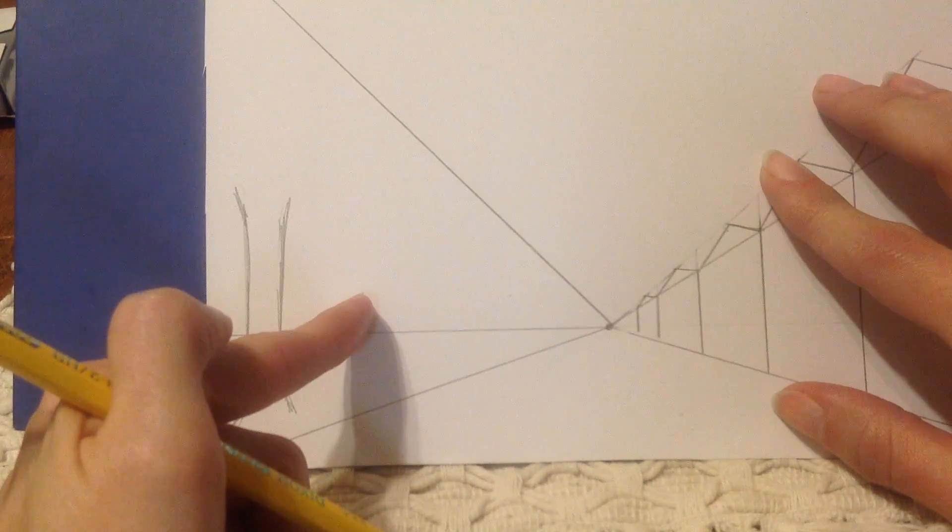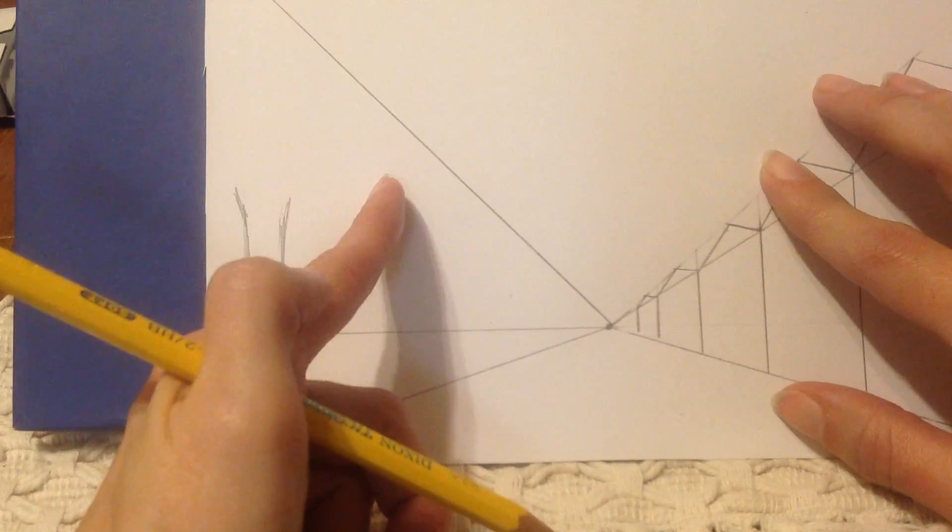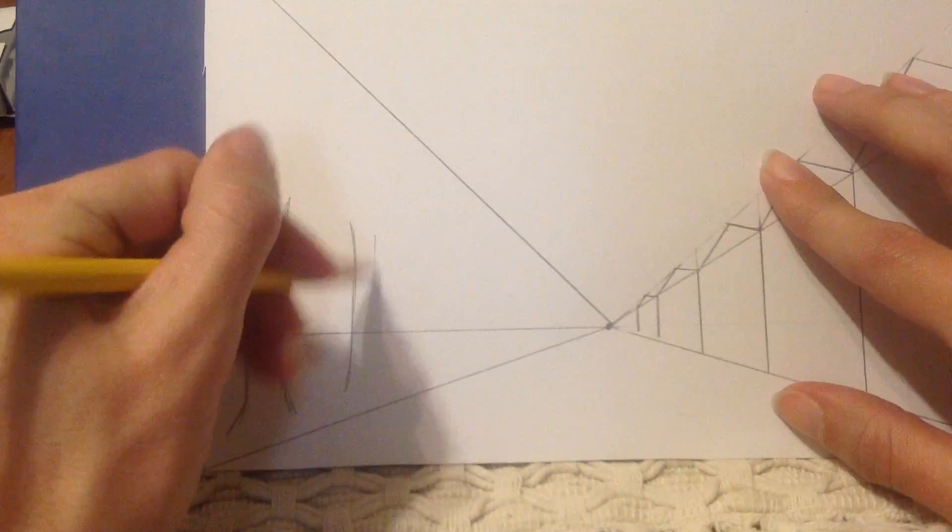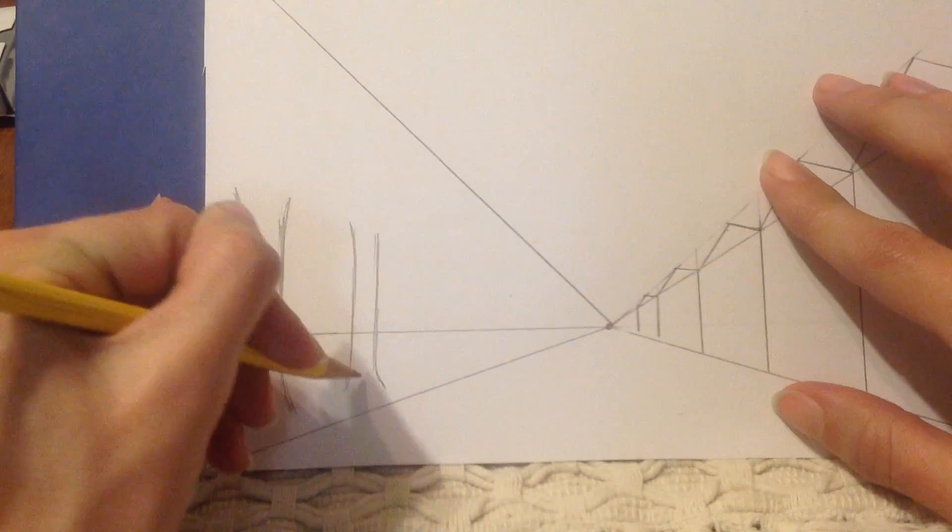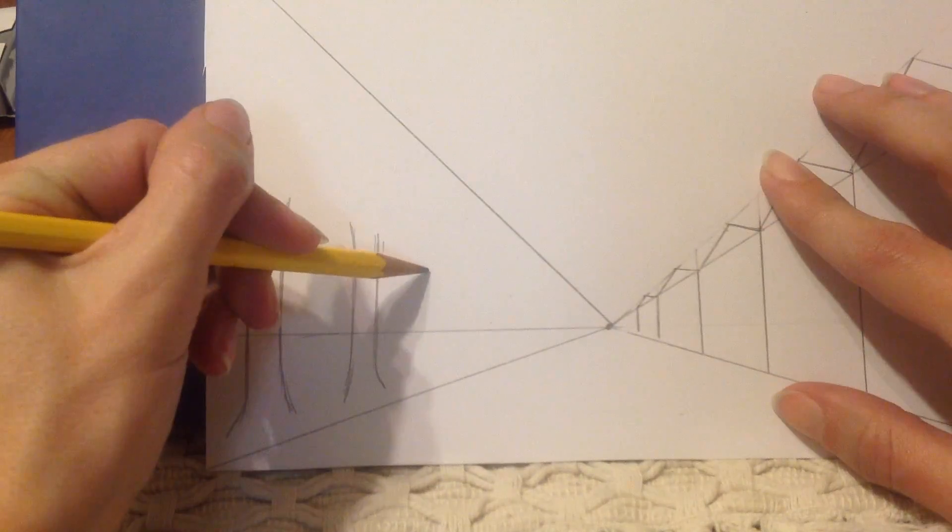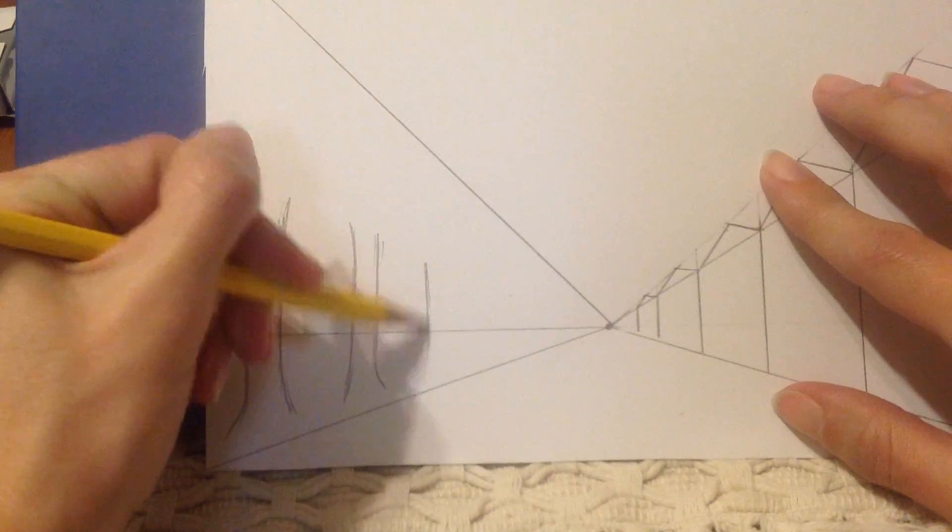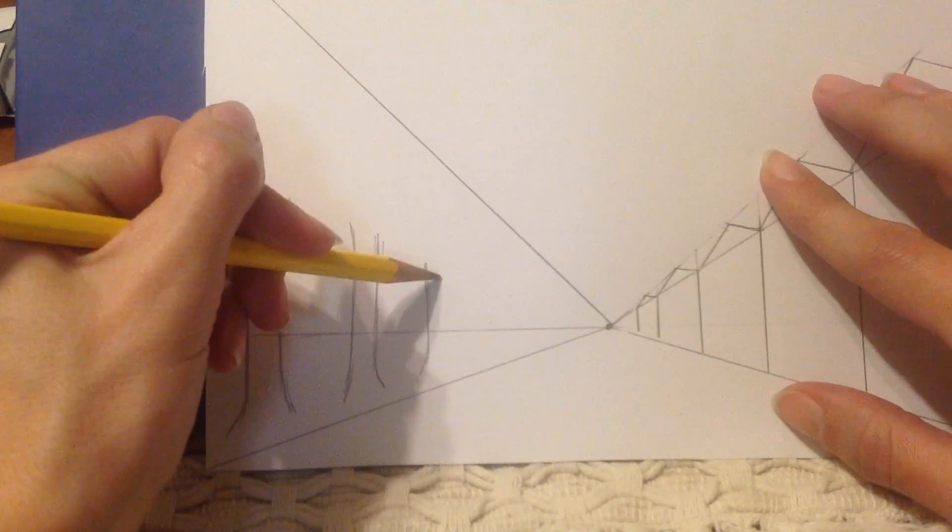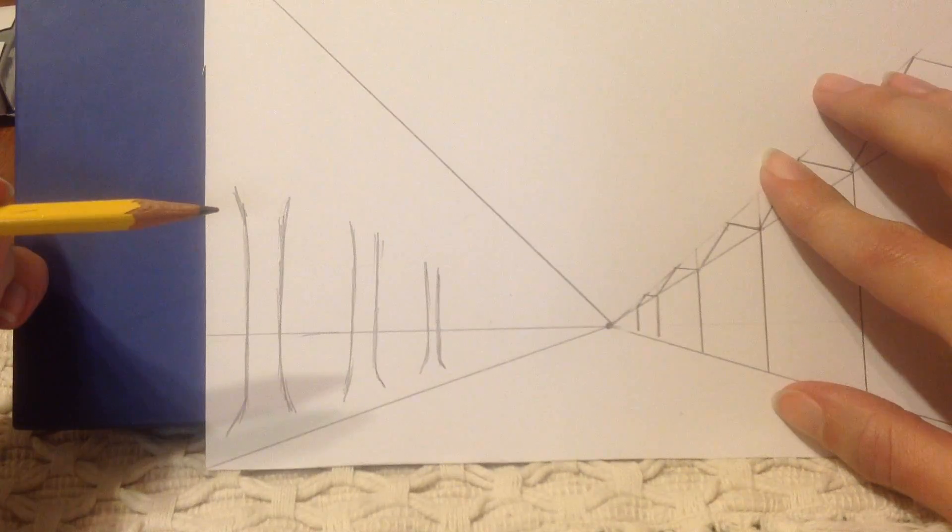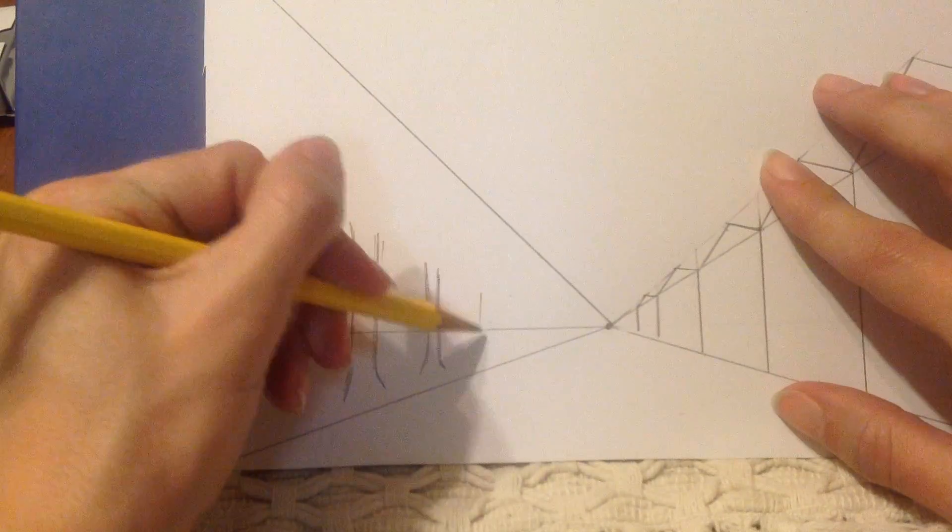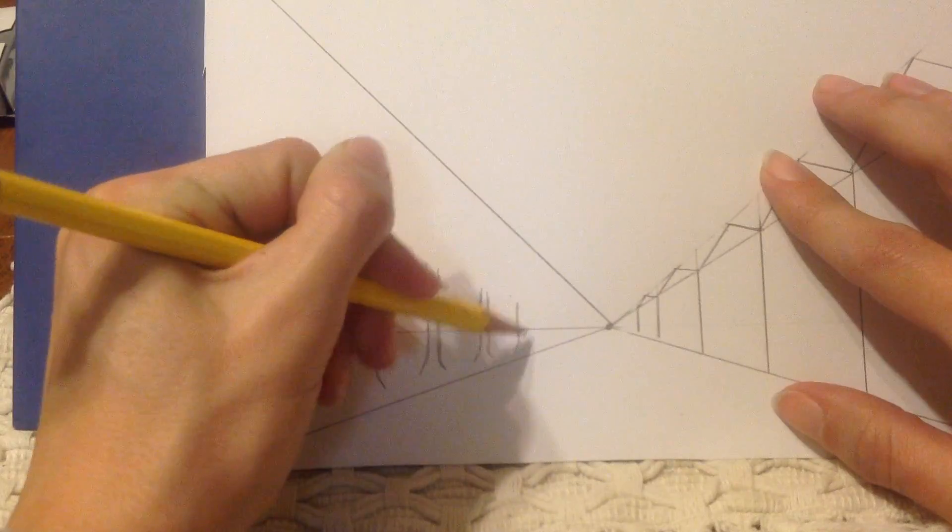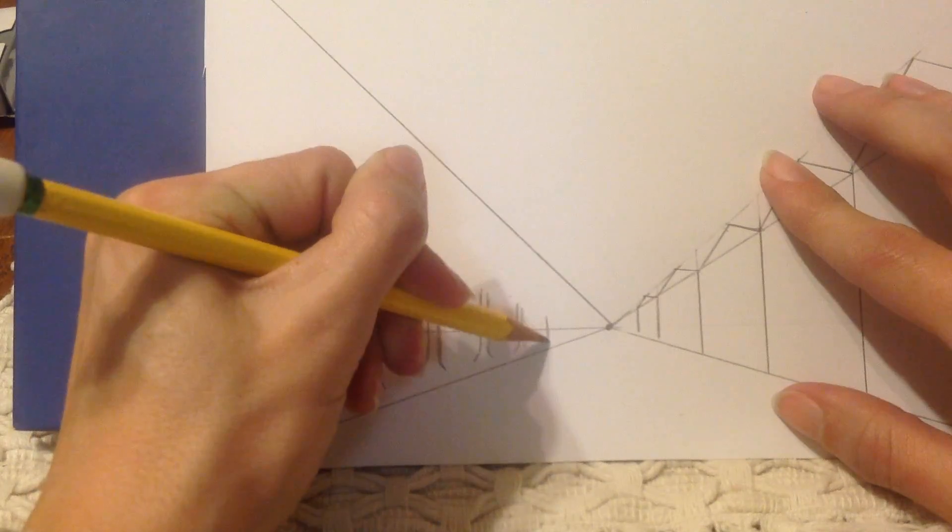Then I go to the next one. It's going to have to be a little shorter so that I leave some room for the leaves. Then the next one. And I'm going to try to make it a little skinnier. And a few more as I'm going back in space. The trunks have to get shorter and shorter.